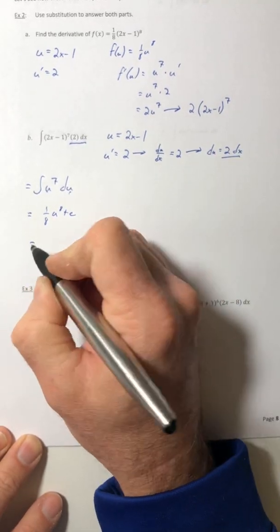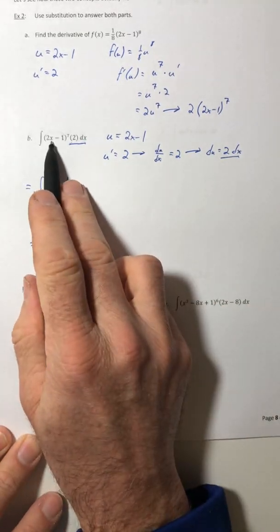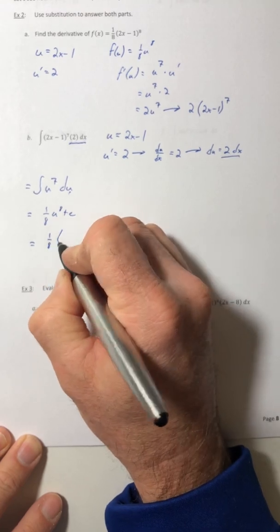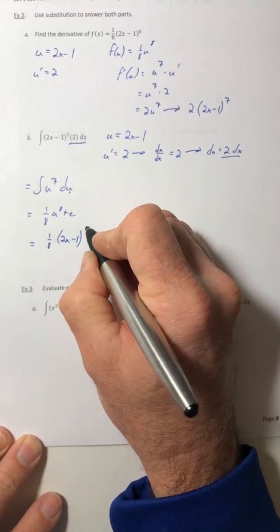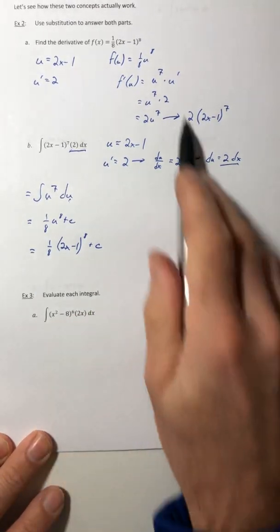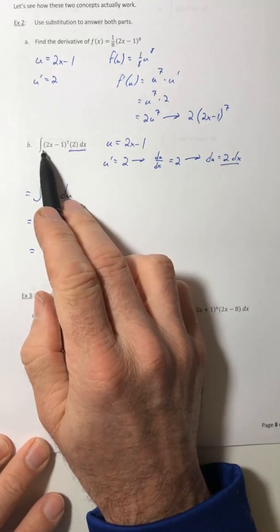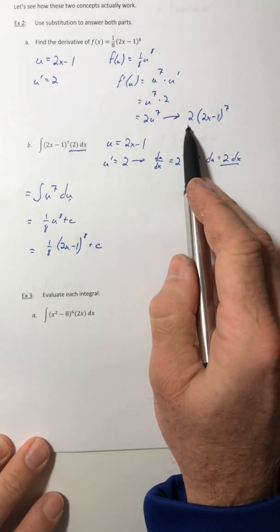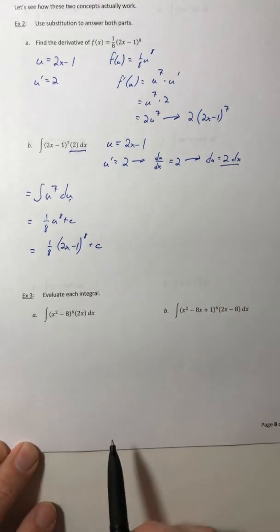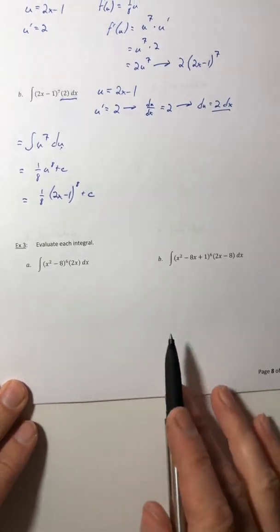And then just like before, reverse your substitution. Get it back to your original variable, which was x. So 1 eighth times 2x minus 1 to the eighth plus c. Essentially, we got right back to where we started. And we should have, because if you notice, what we were integrating was your answer from part a. So that's essentially how u-subs are going to work. We're going to try a lot more examples, but we're going to do those in the following videos.